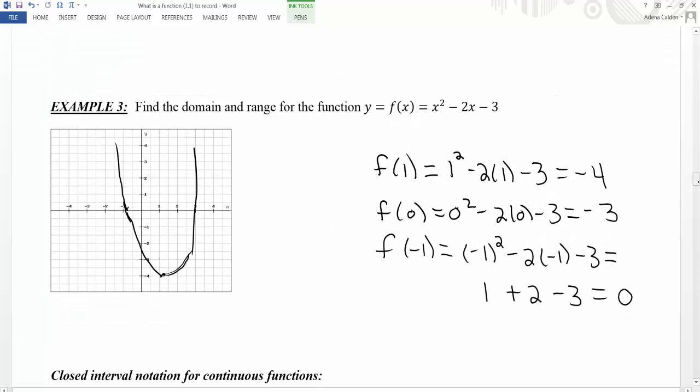Closed interval notation is used when you're going to include the end points of your function. Open interval notation is used when you do not include the end points of your function. So we need to consider if our function has any end points.